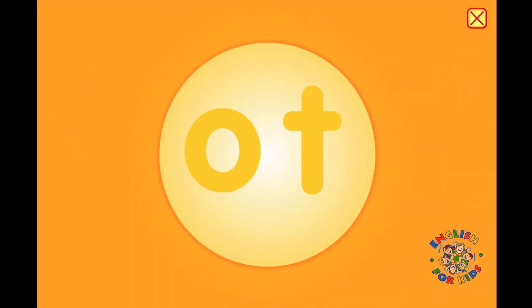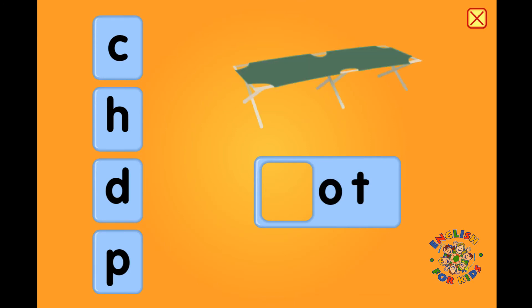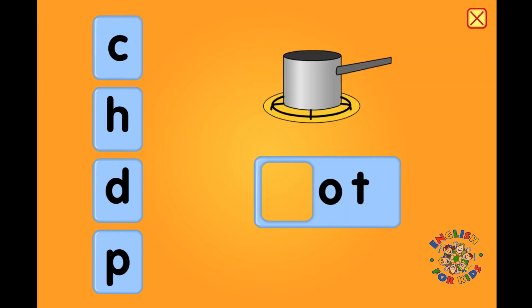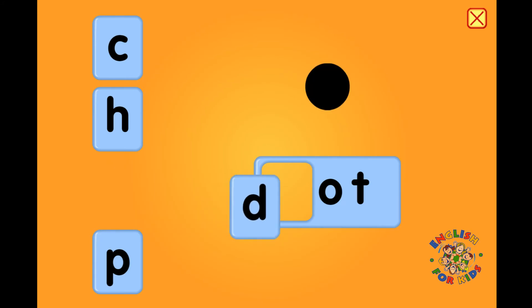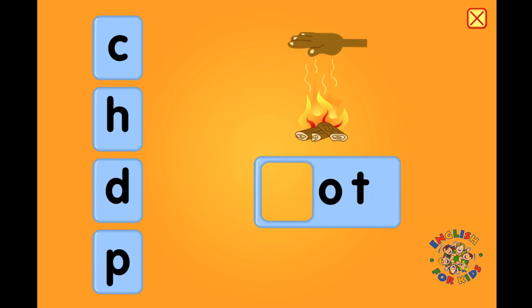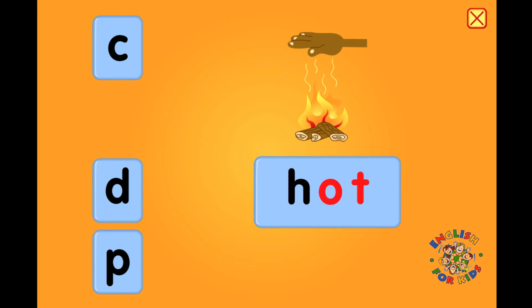Make a word with -ought to match the picture. Caught, c-k, ought — caught. Pot, p, ought — pot. Dot, d, ought — dot. Hot, h, ought — hot.